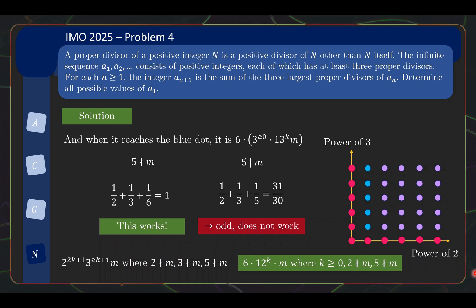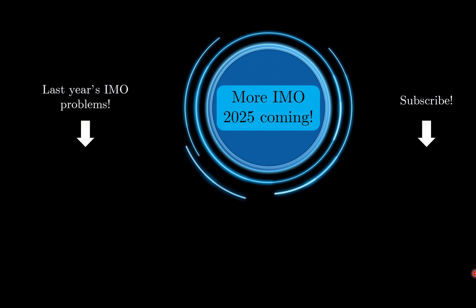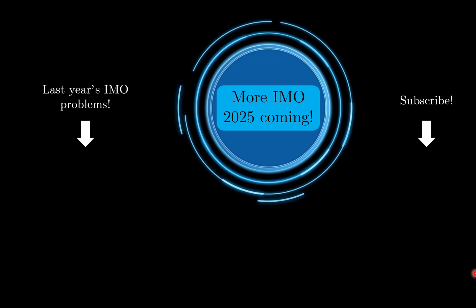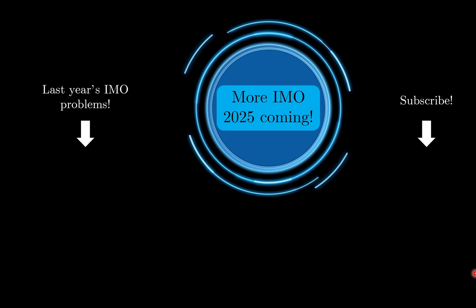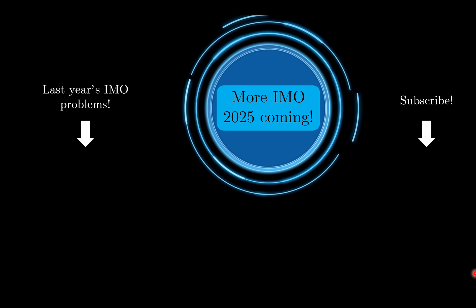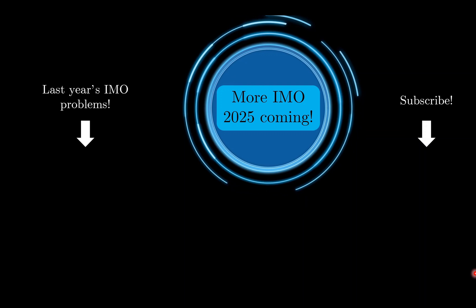That is certainly more complicated than I would have expected a problem 4 number theory solution to be. Compared to problem 3 number theory, I would say the gap isn't as big as I thought — I'm not sure what the problem selection committee was thinking when they chose problem 3 and this problem 4. Do you agree with my thoughts? Let me know in the comments below, and I'll see you for problem 5.